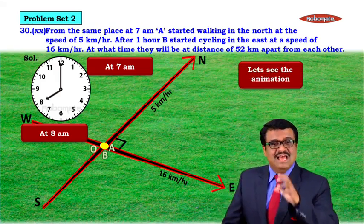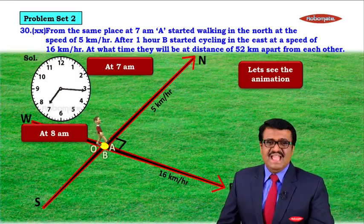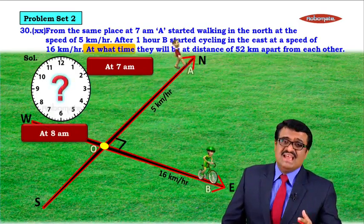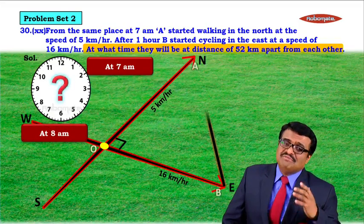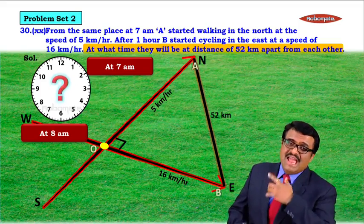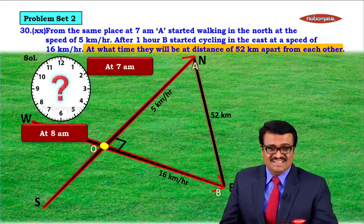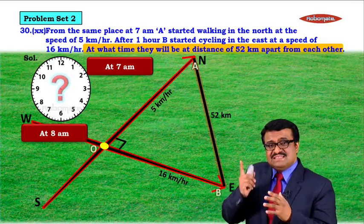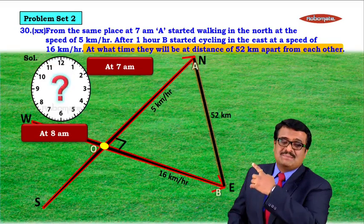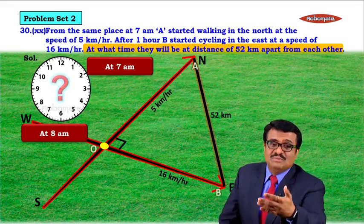Now let us understand this problem with the help of an animation. At 7 a.m. A started walking in the north, and at 8 a.m. B started cycling in the east. The question is: at what time will the distance between A and B become 52 km?